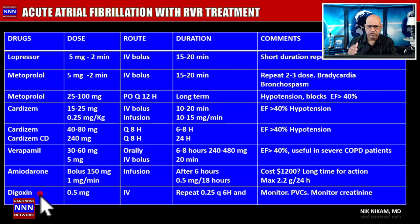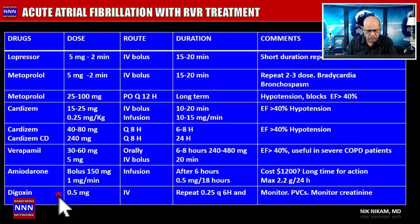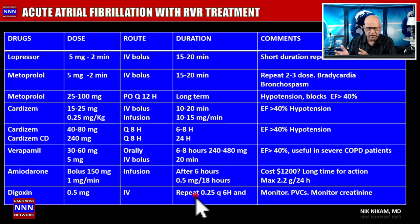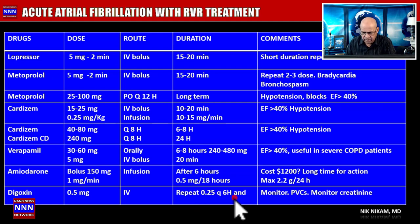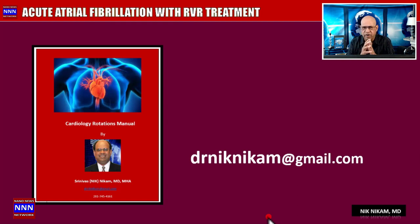Digoxin has taken a back seat, but in practice I find it quite useful in patients with COPD, hypotension, or other complicating problems. The main concern is renal function — adjust the dose based on creatinine and GFR. The loading dose is 0.5 mg IV bolus; after six hours, assess the heart rate response and check for ectopics, then repeat 0.25 mg every six hours as needed. Follow up with a digoxin level at 24 hours and monitor for PVCs.